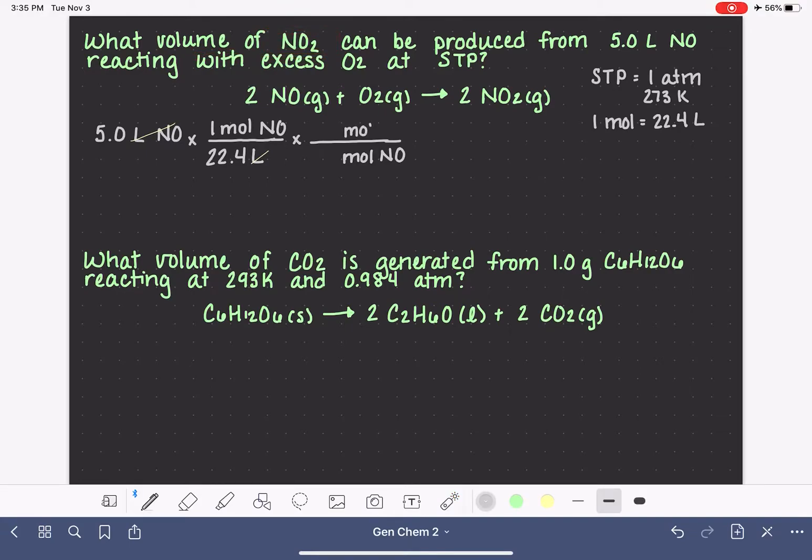So we want moles of NO2 to be on the top of this conversion factor. The relationship between NO and NO2 is the stoichiometric coefficients for each of these molecules from the balanced equation. So two moles of NO2 equates to two moles of NO. And in that step, we've canceled out that unit as well. And so our last step, we need to get out of units of moles NO2 and convert into our desired units. The problem is asking us to convert into volume.